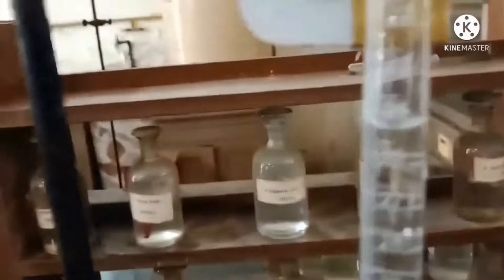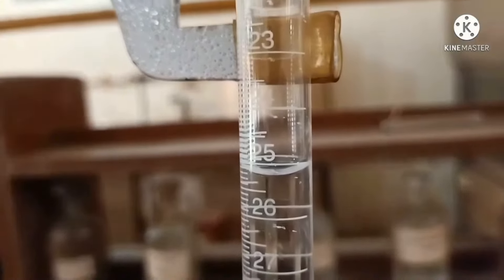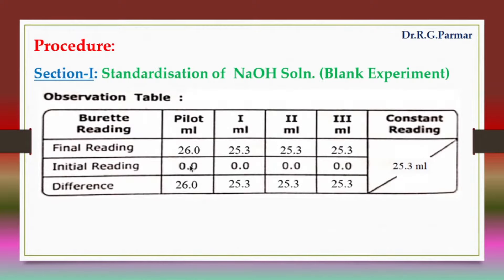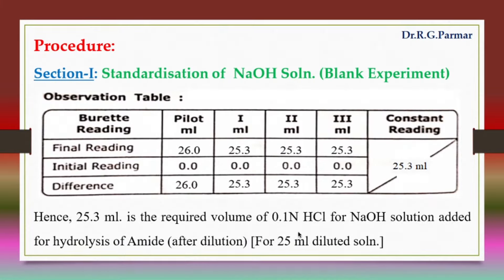The color change at the endpoint is light pink to colorless. The burette reading is 25.3 ml. So, the volume of 0.1 normal HCl required for 25 ml dilute NaOH solution is 25.3 ml.